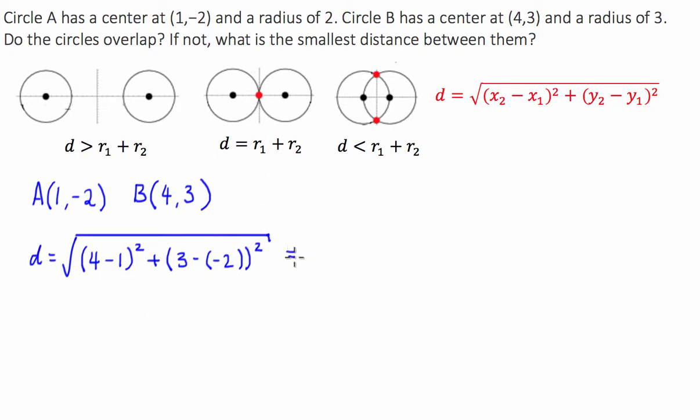This comes out to the square root of 9 plus 25, which is equal to the square root of 34, which is approximately 5.83 units.